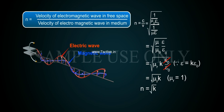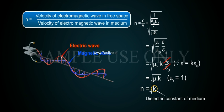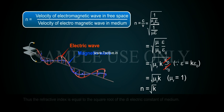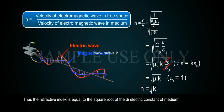Therefore, N equals the square root of k, where k is the dielectric constant of the medium. Thus, the refractive index is equal to the square root of the dielectric constant of the medium.